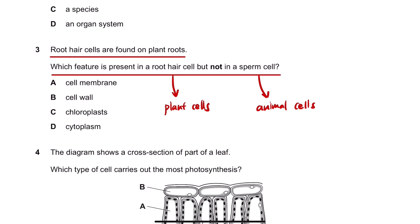So it's like plant cells versus animal cells, and you know that plant cells have chloroplasts, cell walls, and large vacuoles, which animal cells don't have.